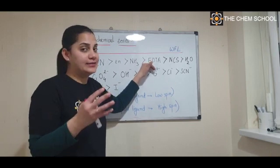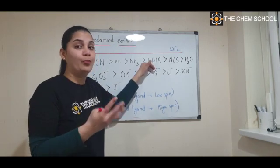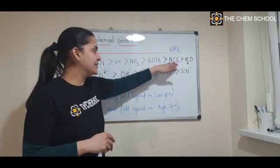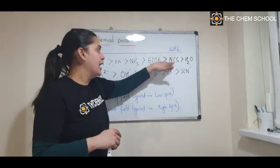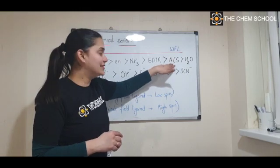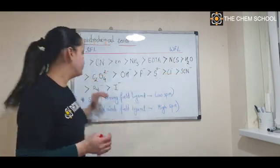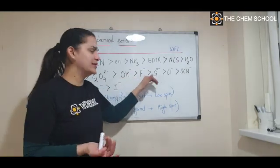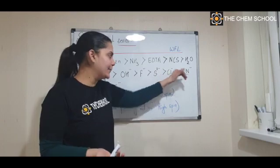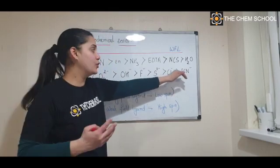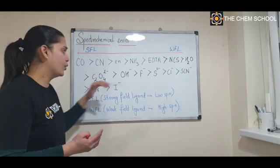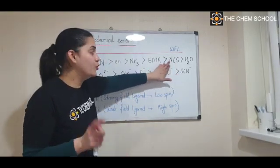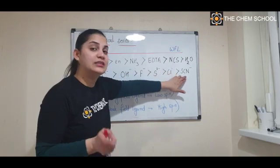EDTA is anionic but has a higher percentage of neutral character because it is hexadentate — it can donate four lone pairs and two negative charges. NCN (isocyanate) is anionic. Water is neutral. Then you have oxalato (anionic), hydroxide (anionic), fluoride (anionic), sulphide (anionic), chloride (anionic), and thiocyanide (anionic). Note that isocyanide is stronger than cyanide.